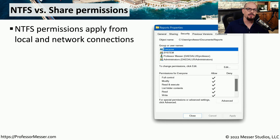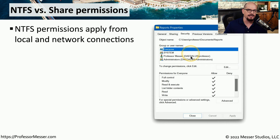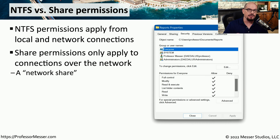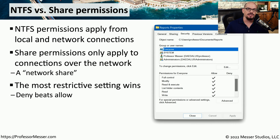On a local device, the rights and permissions that you have to files and other objects on that drive are based on the permissions associated in NTFS. Under every file or folder in NTFS, there is a security tab, and you can specify the groups or users that have access to that object and what rights and permissions they might have. If you're connecting across the network, you're also subject to a different set of permissions called share permissions — those are permissions associated with the access to that share across the network. And then once you have access to that device, you also have to take into account the NTFS permissions for that user.